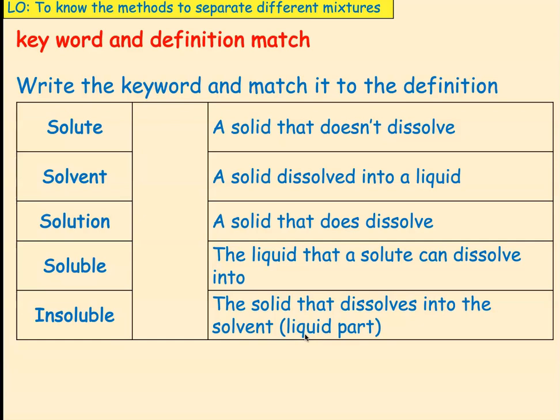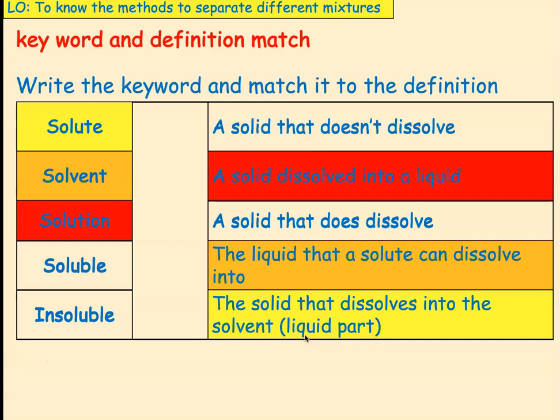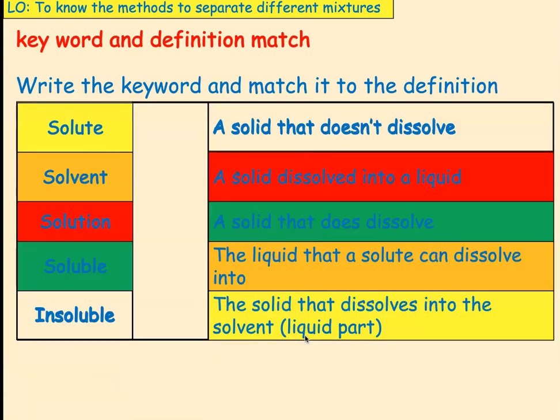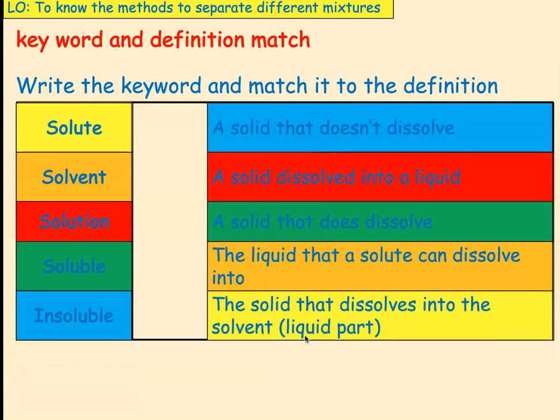Okay, year 10. Right, let's go through them. So, a solute is a solid that dissolves in the solvent, the liquid part. A solvent is the liquid that a solute can dissolve in. A solution is a solid dissolved into a liquid. When we say soluble, we mean a solid that does dissolve. And insoluble is a solid that doesn't dissolve. So, hopefully you got most of them right.